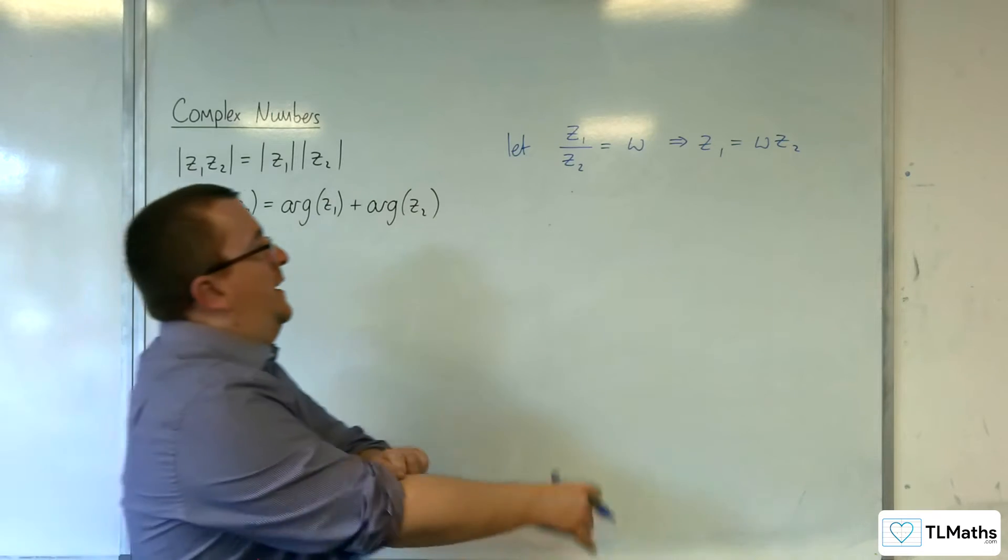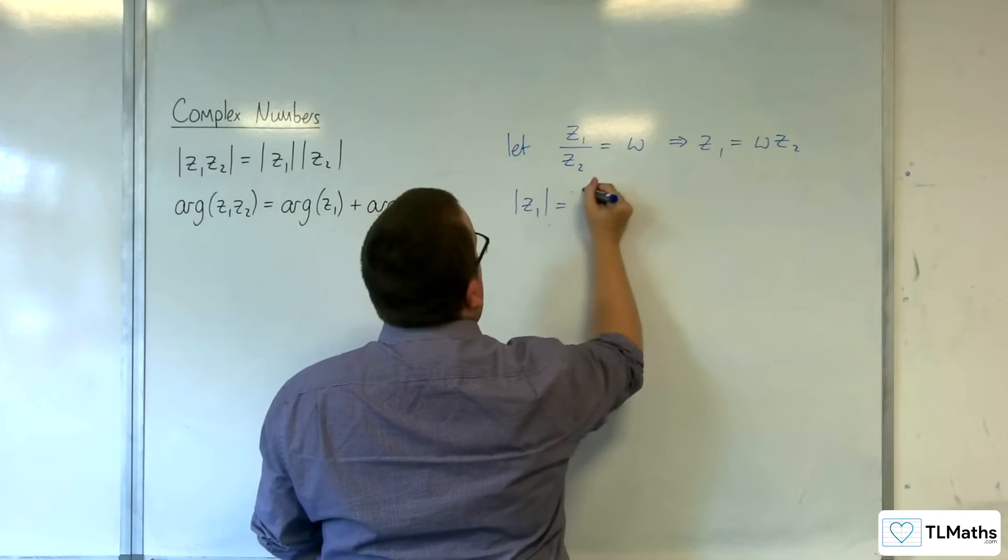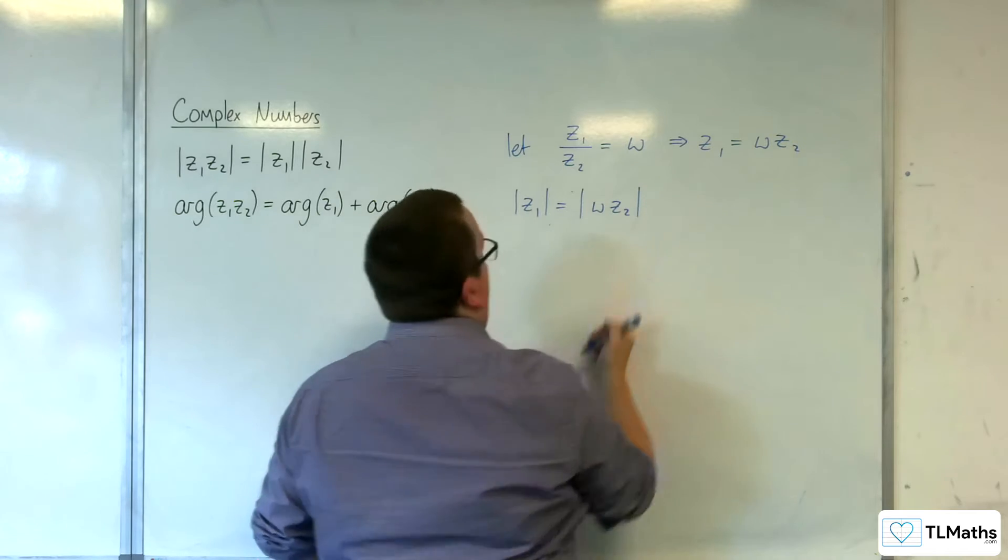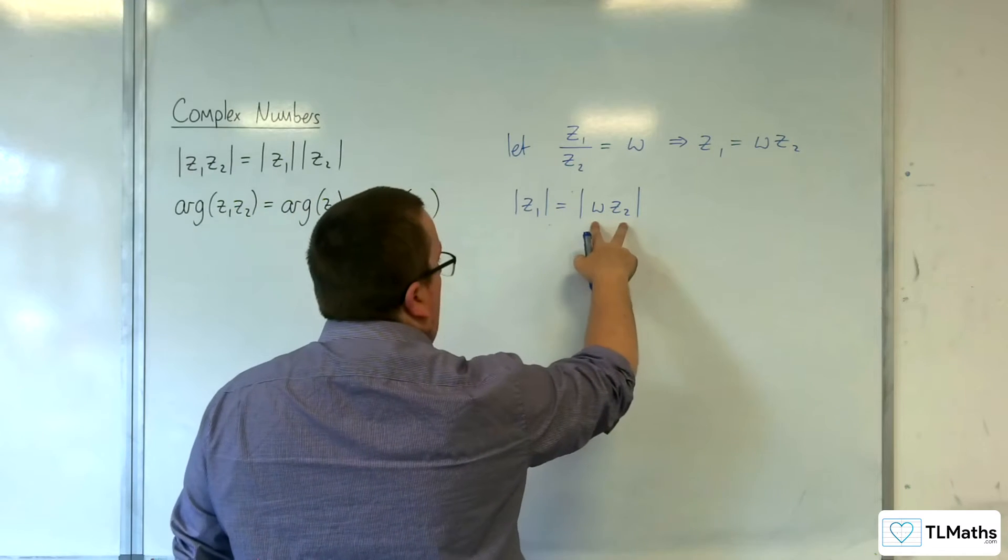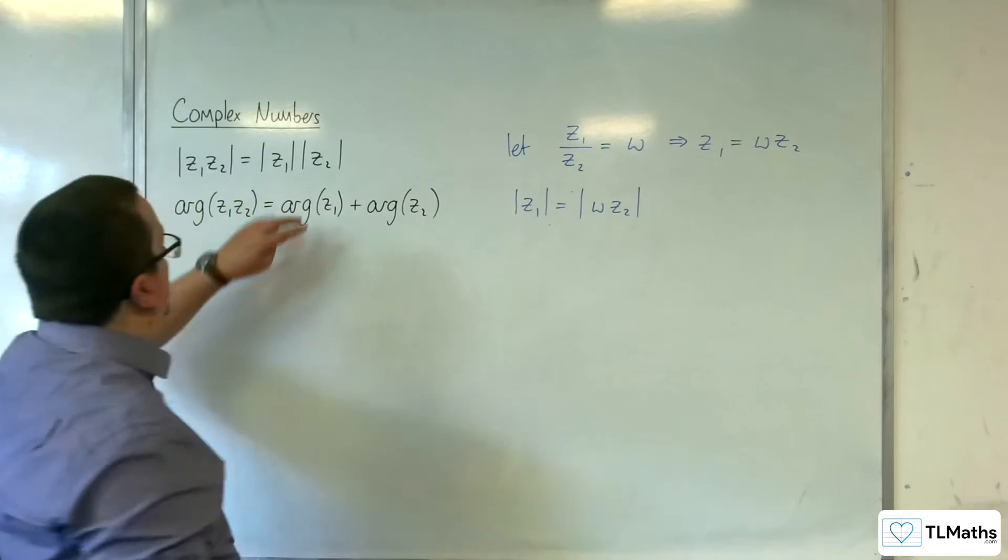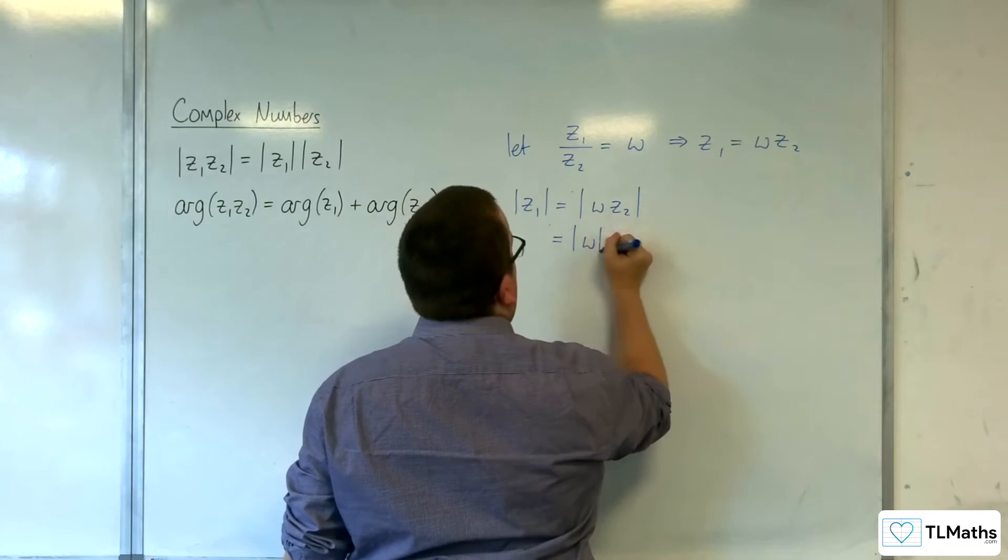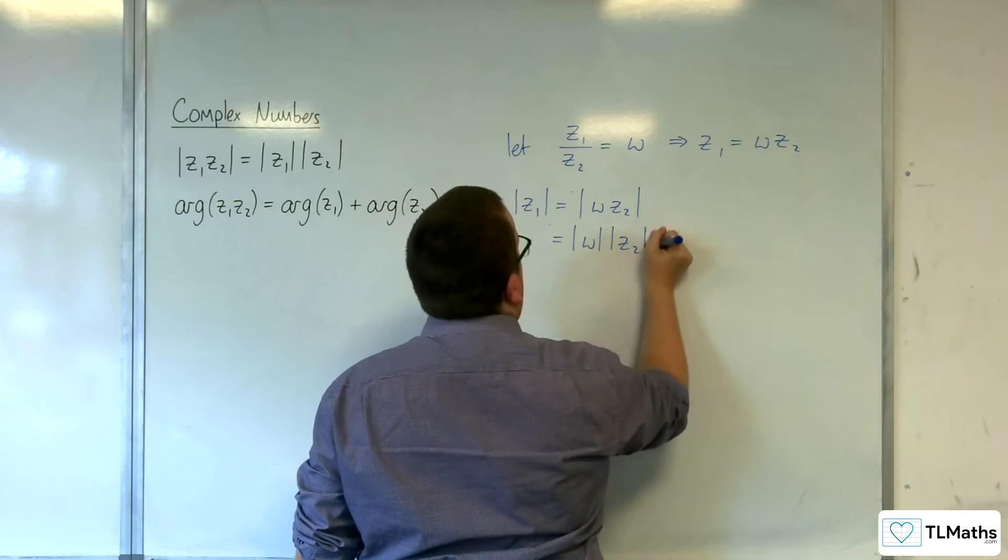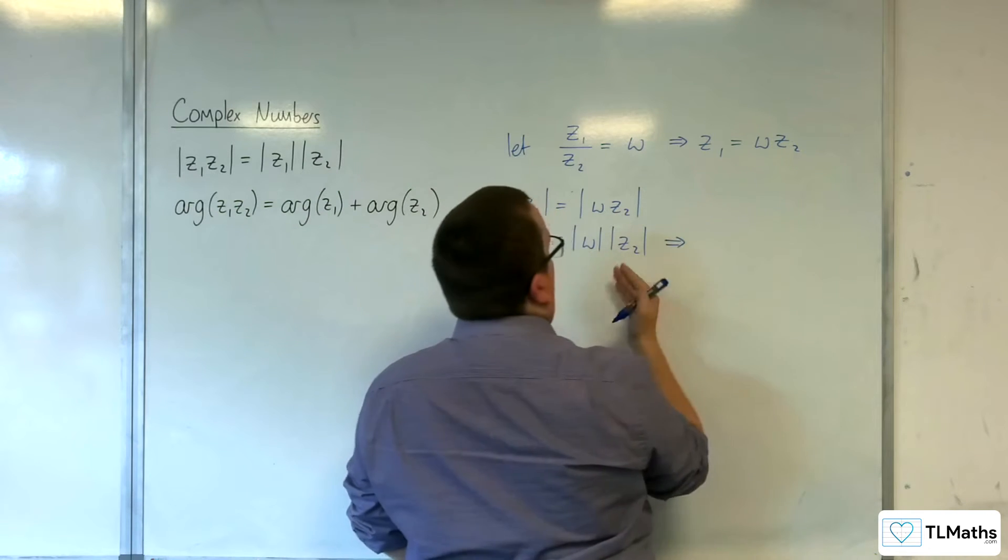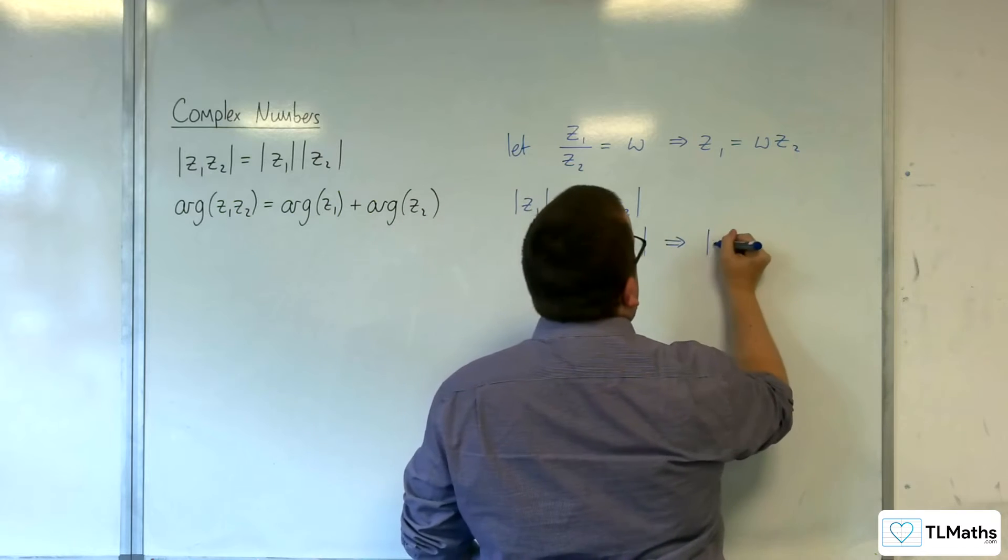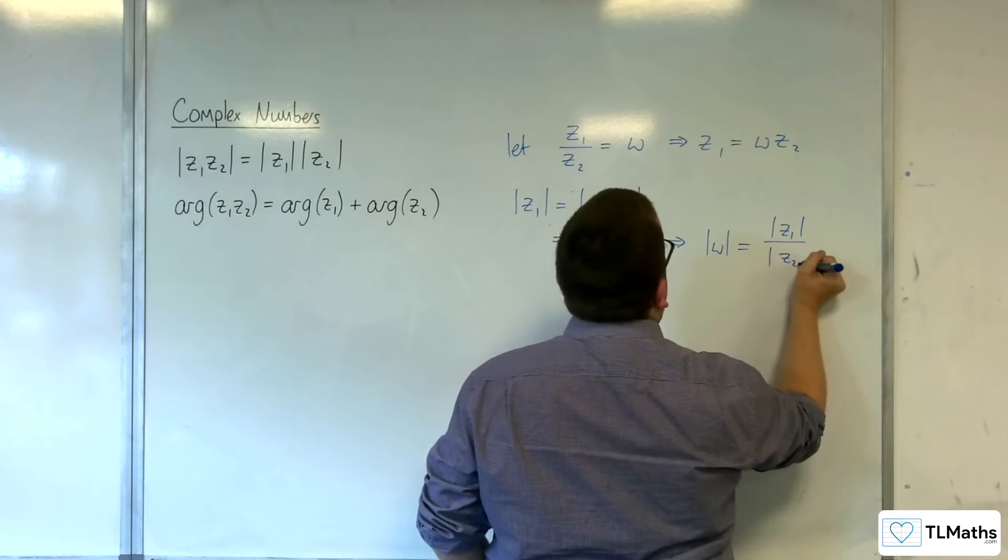So if that is the case, then the length of Z1 must be the length of W times Z2. Now we know that the modulus of the product of two complex numbers, we can break it apart using this rule. So this is the same as the length of W times the length of Z2. So if we divide now by the length of Z2, the length of W must be equal to the length of Z1 divided by the length of Z2.